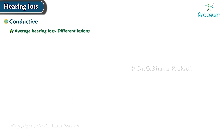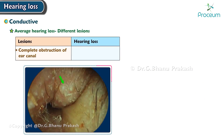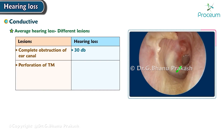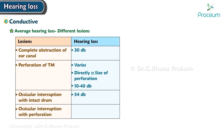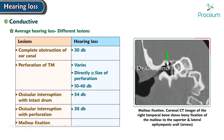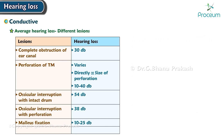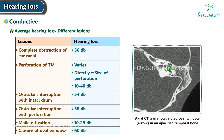Average hearing loss varies by lesion of the conductive apparatus. Complete obstruction of the ear canal causes 30 dB of hearing loss. Perforation of the tympanic membrane varies directly with the size of perforation, ranging from 10 to 40 dB. Ossicular interruption with an intact drum causes 54 dB loss, while ossicular interruption with a perforation causes 38 dB loss. Malleus fixation ranges from 10 to 25 dB, and closure of the oval window causes 60 dB loss. Notably, ossicular interruption with an intact drum causes more loss than with a perforated drum.